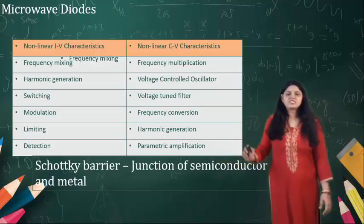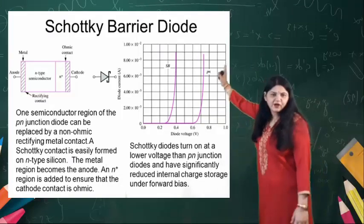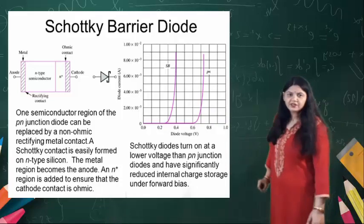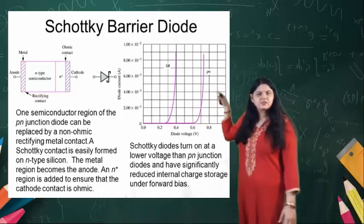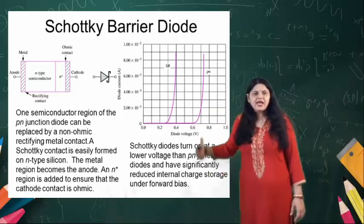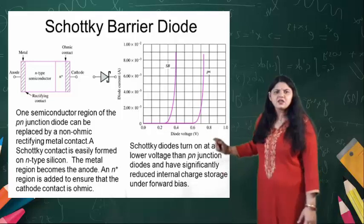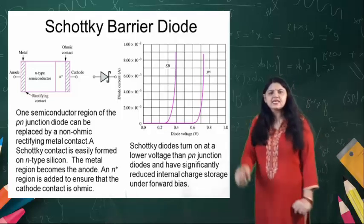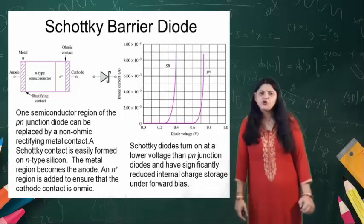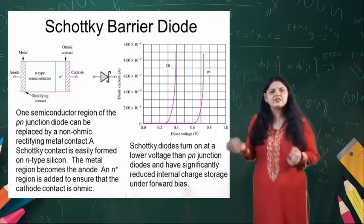Now we are going to discuss about the first diode, which is the Schottky barrier diode. This is the symbol of the Schottky barrier diode. In its construction, there is an N-type semiconductor and at one end there is a metal conductor contact, and at the cathode an ohmic contact is provided. These two nodes are known as the anode and the cathode.